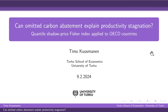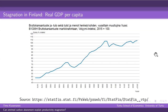Let me start with this figure to illustrate the stagnation of growth in Finland. This is the volume index of the real GDP per capita in Finland from 1975 to the latest year 2022, taken from the Statistics Finland website. As you can see, we had steady growth of real GDP per capita until about the financial crisis in 2008. Since then, we've had some minor fluctuations, but not really any growth. This is a very serious concern for the public economy.